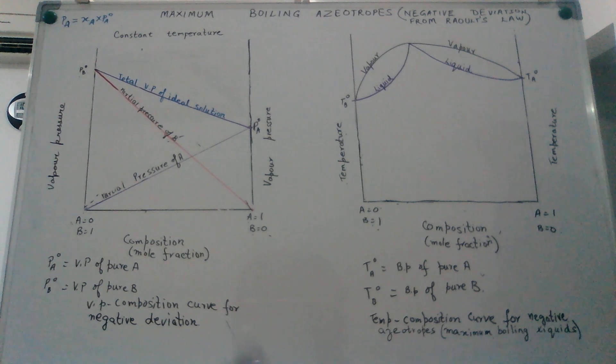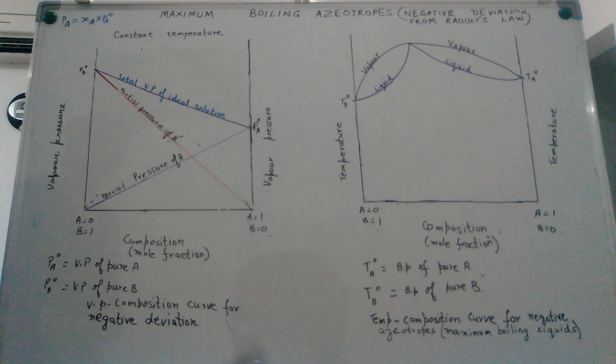Hello students, coming to the third video in this series where we are talking about liquid mixtures which show deviation from Raoult's law. In this lesson we are going to talk about the maximum boiling azeotropes or those liquid mixtures which show negative deviation from Raoult's law.